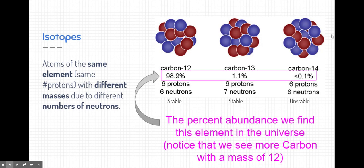I want to take a look really quickly at these percentages. The percentages are the percent abundance we find this element in the universe. Notice that there's a lot more chance of finding carbon-12 than there is finding carbon-13 and carbon-14. Both carbon-12 and carbon-13 have stable nuclei. They're held together fairly well. But carbon-14 has an unstable nucleus. That's probably why we only find less than 0.1% of carbon-14 in the universe.